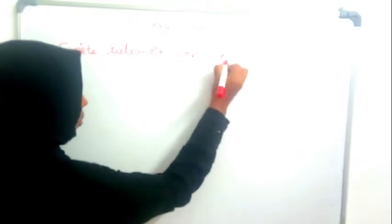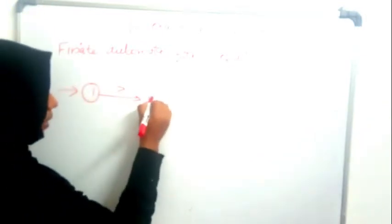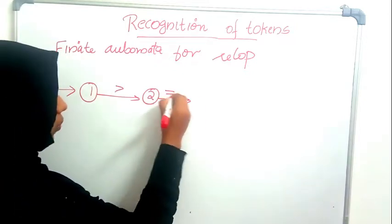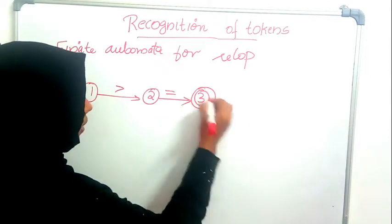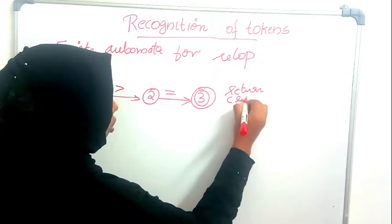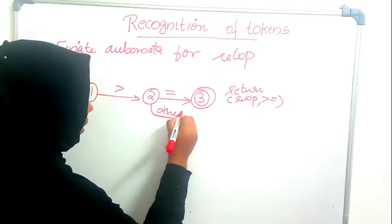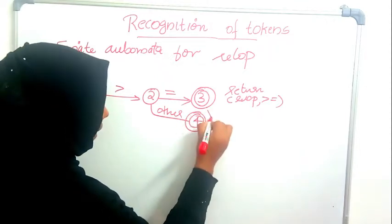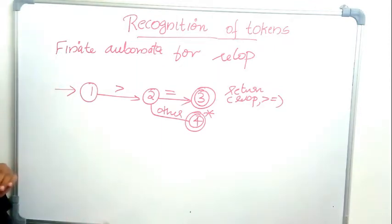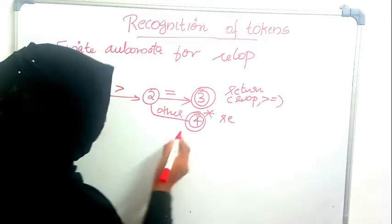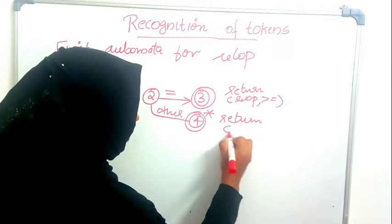Now we will see the finite automaton — or transition diagram — for relational operators. At the starting state, if we see a greater-than sign, the lexical analyzer checks whether the next character is equal-to. If it is, we go to the final state returning relop comma 'greater than or equal to'. If it is anything other than equal-to, we go to a retracting final state and return relop comma 'greater than'.